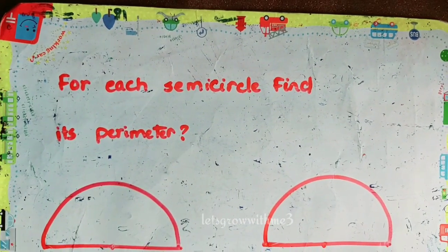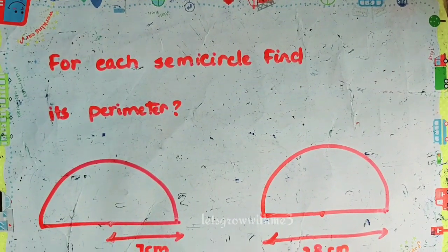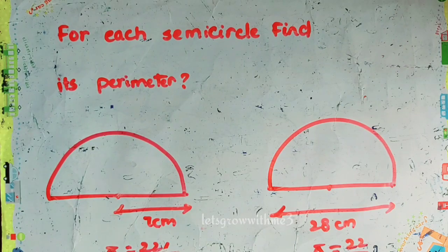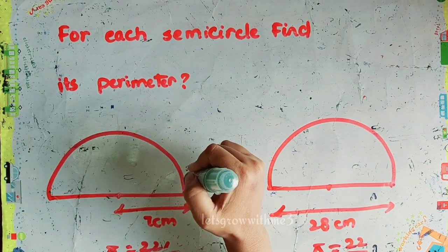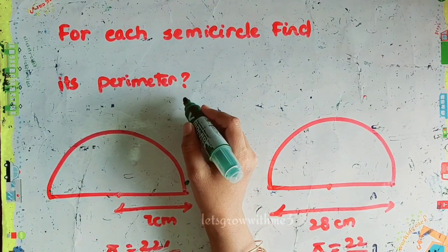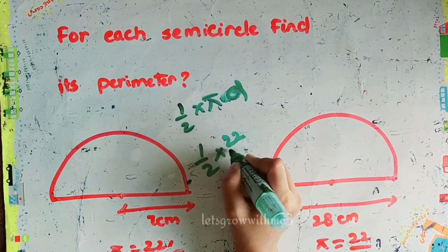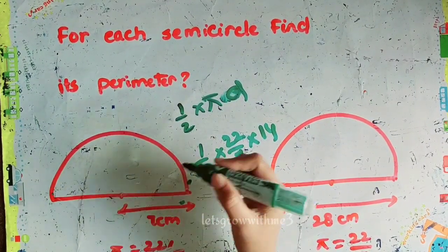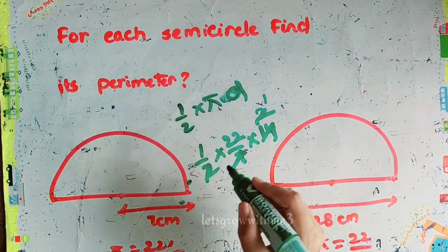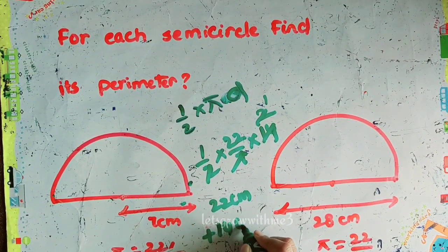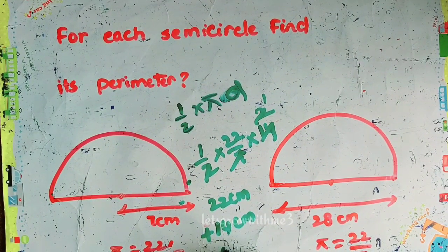Next question: for each semicircle, find its perimeter. First find the curved part using (1/2) times πd. Here π = 22/7 and radius = 7 cm, so diameter = 14 cm. Substituting: (1/2) times 22/7 times 14. Taking common factors: 7 into 14 is 2, giving 22 centimeters for the curved part. Then perimeter = curved part + diameter = 22 + 14 = 36 centimeters.